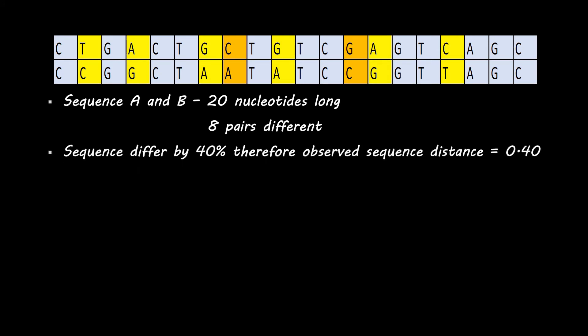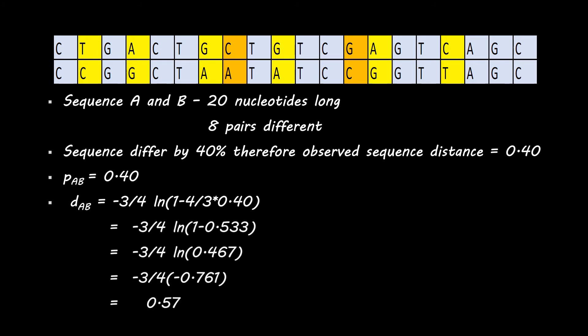Sequences differ by 40 percent, therefore observed sequence distance is 0.40, so pAB is 0.40. Then we can calculate the evolutionary distance by the formula which was provided. This is how we can calculate the evolutionary distance.